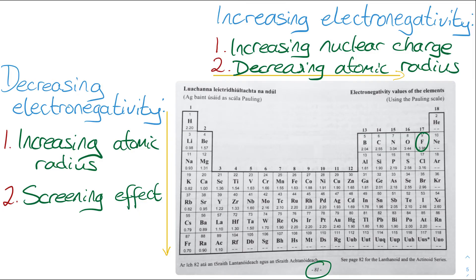The electronegativity trend follows the same trend as the first ionization energy and for the same reasons. Going down the group, the atomic radius is getting bigger due to an increasing number of orbits. This means the electrons are getting further away from the attractive force of the nucleus, so there is a smaller attractive force between the nucleus and the shared pair of electrons, and therefore electronegativity decreases. The screening effect is another reason electronegativity decreases down the group — the nuclear charge is increasing but it is cancelled out by the screening effect.